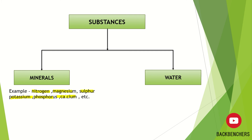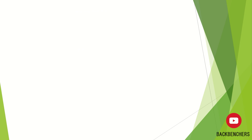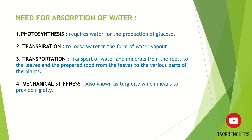We need to know why plants need to absorb water and minerals. Starting with why plants need water — the first important point is photosynthesis. Photosynthesis is a process in which plants produce food, and during photosynthesis water is required as a raw material. So photosynthesis requires water for the production of glucose in plants.